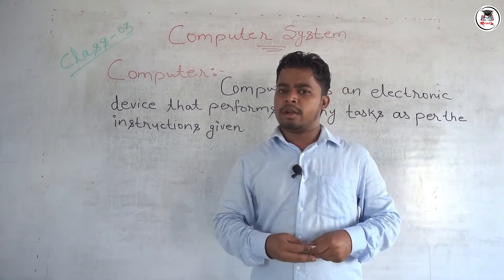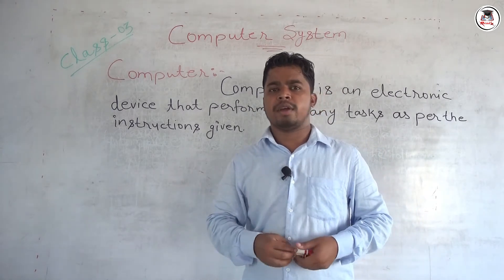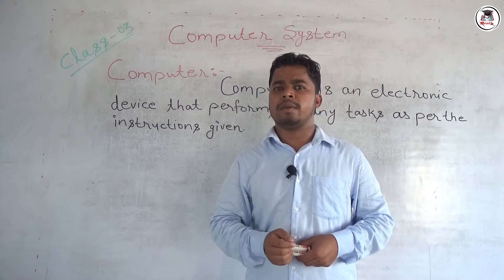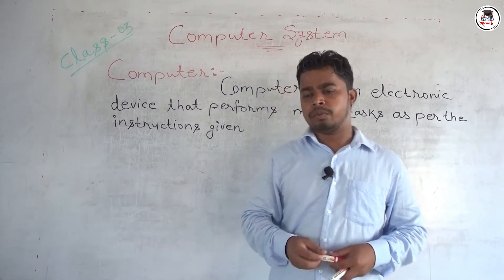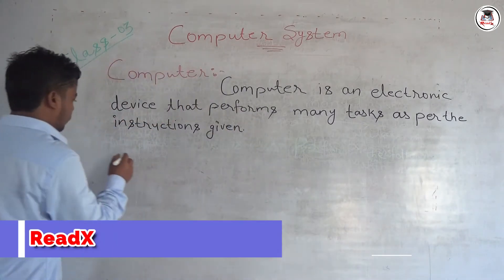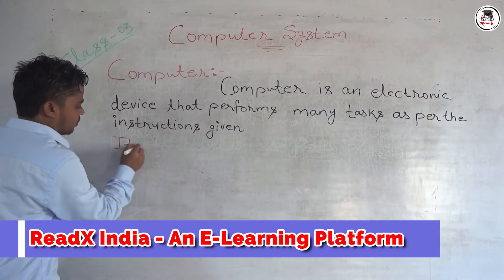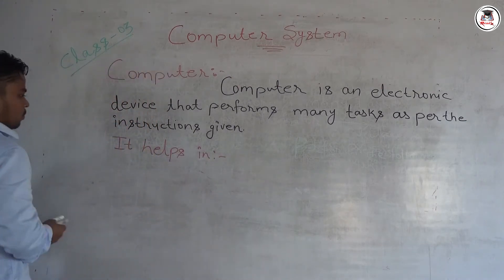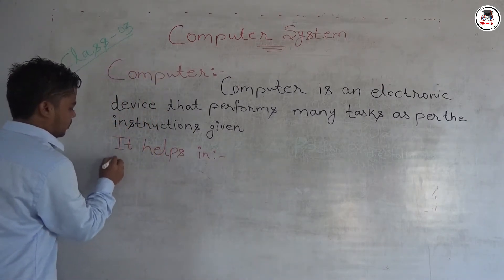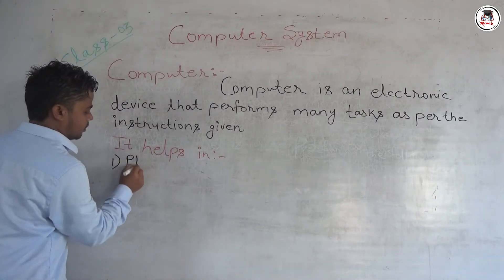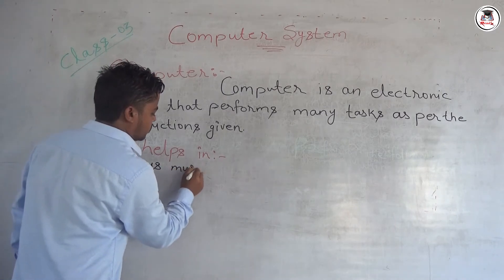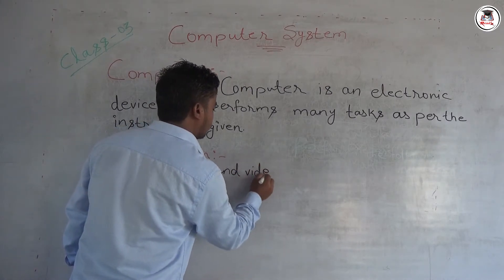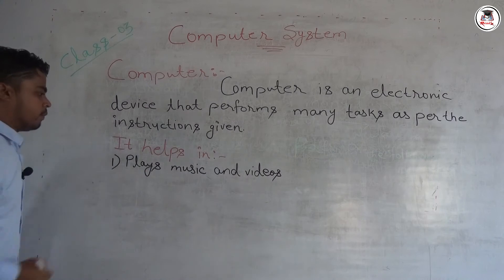So, you might have got the definition of computer — how we can define the computer. As I have mentioned, computer can help us in different ways. So, let us see where it helps and how. It helps in playing music and videos. With the help of computer, we can play music and videos.